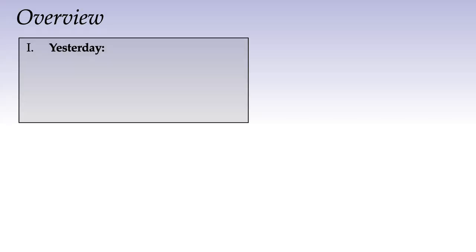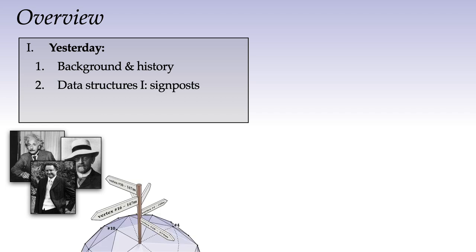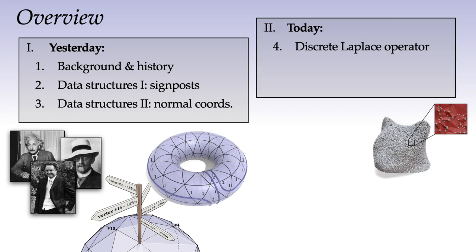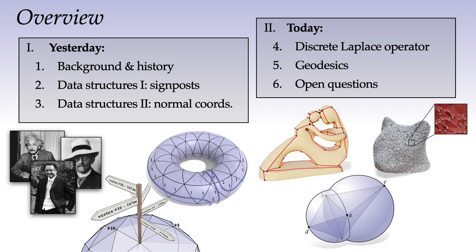Just to recap: yesterday we gave some basic background on intrinsic triangulations and introduced two data structures for tracking the correspondence between triangulations — both signposts and normal coordinates. Today we're going to look at some things we can build on top of those data structures, including a new discrete Laplace operator, a new flip-based algorithm for computing geodesics, as well as some interesting open questions.